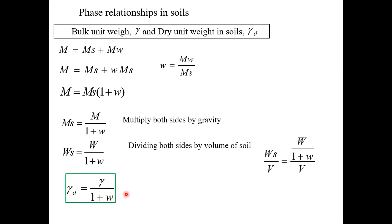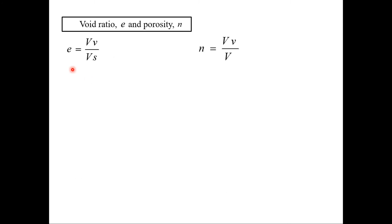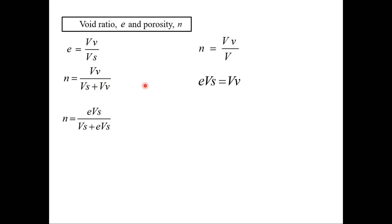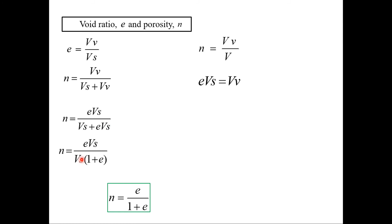The next relation is to relate void ratio with porosity. Void ratio (e) is the ratio of volume of voids to volume of solids, and porosity (n) is the ratio of volume of voids to total volume. Porosity equals volume of voids divided by total volume, where total volume is volume of solids plus volume of voids. Since volume of voids equals void ratio times volume of solids, substituting gives n equals e times volume of solids divided by volume of solids plus e times volume of solids. Cancelling volume of solids: n = e / (1 + e).